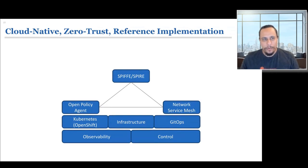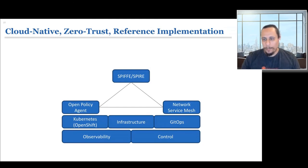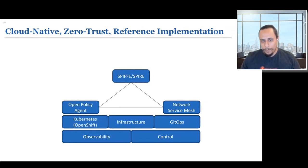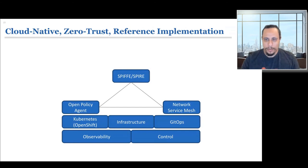We've been working on a reference implementation for this in the cloud native environment, focusing around three primary things: for identity, we're using Spiffe and Spire; for policy, we're using Open Policy Agent; and for automation, we're relying heavily on things like Network Service Mesh. We also build this on top of Kubernetes and systems like OpenShift, bring in infrastructure automation, and GitOps-style processes. Underpinning all of this, you still need observability and control across the whole stack. All of this works in conjunction to deliver the infrastructure that is part of HealthOS.